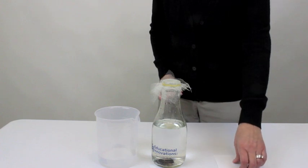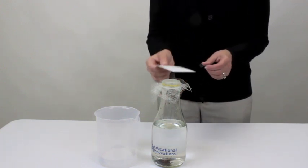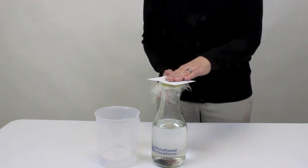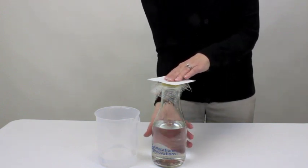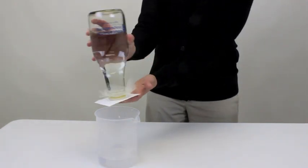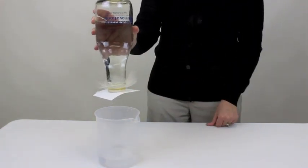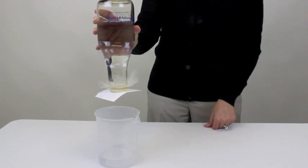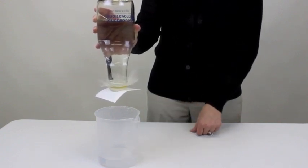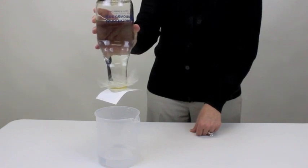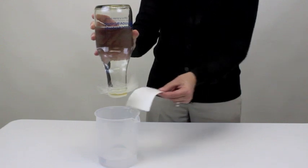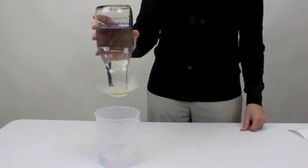I'm confident that you've seen the activity where you take a piece of oak tag or cardboard, and you place it on the top of a cup, and then you invert the cup, and the water stays in. If I move my hand, the card stays on. That's because there's a certain amount of air pressure that's pushing up. Now, with this activity, there's a new twist. Watch what happens when I remove the card. The water stays in.